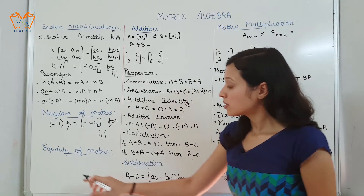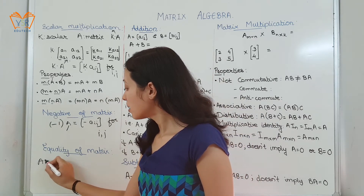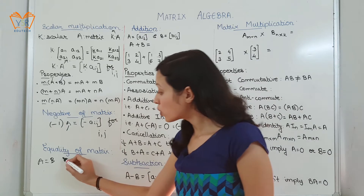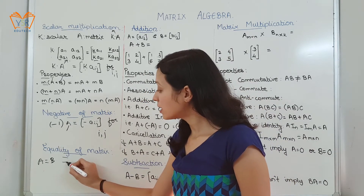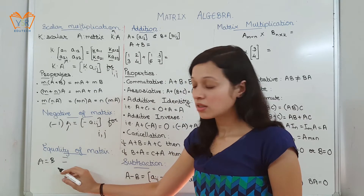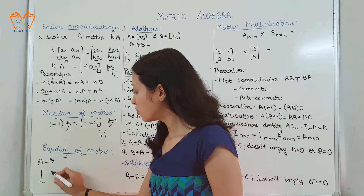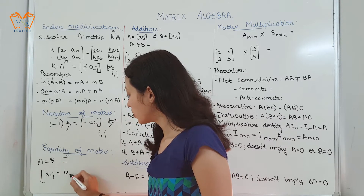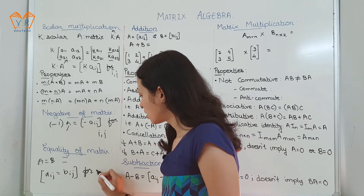Next, equality of matrices. Two matrices a and b are said to be equal only when they are of the same order and all the elements of those matrices are equal. We can write a equals b only when a_ij equals b_ij for all i,j.